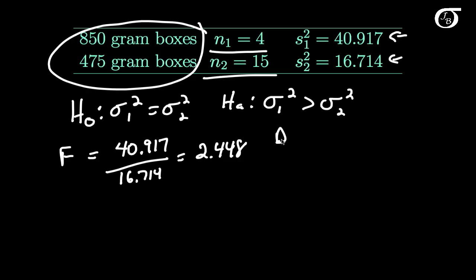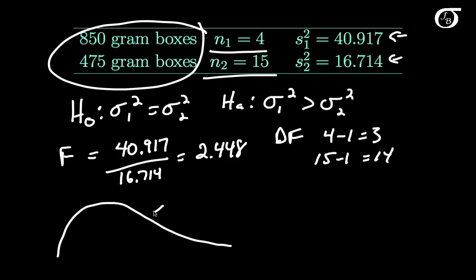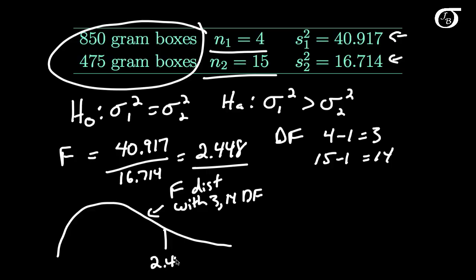The degrees of freedom in the numerator are N1 minus 1, which is 4 minus 1, giving 3 degrees of freedom. In the denominator, 15 minus 1 gives 14 degrees of freedom. So we have an F distribution with 3 and 14 degrees of freedom, and our test statistic is 2.448. Since the alternative hypothesis is that sigma 1 squared is greater than sigma 2 squared, our p-value is the area to the right of 2.448 under this F distribution.